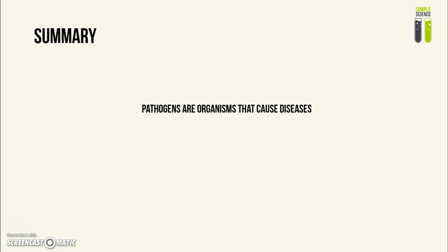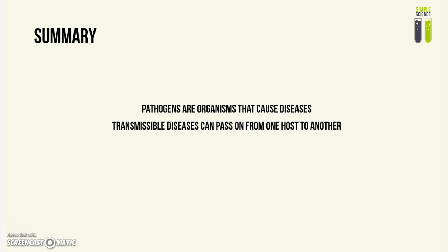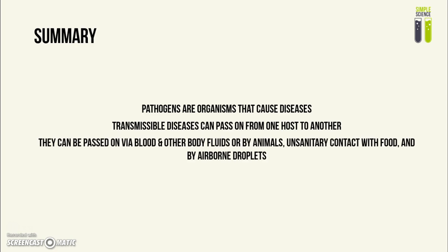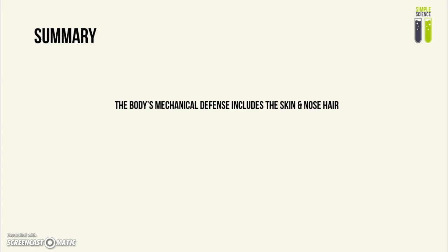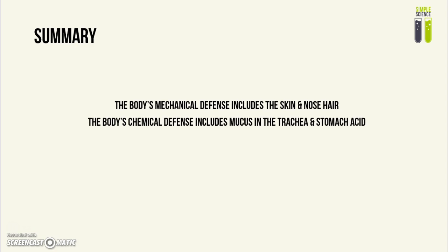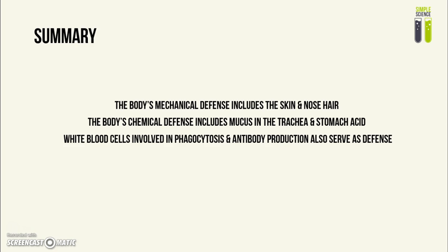To summarize: pathogens are organisms that can cause disease. Transmissible diseases are any disease that can be passed from one host to another, via blood and other body fluids, by animals like mosquitoes carrying malaria, by contact with unhygienic food or surfaces, or by droplets in the air. The body's mechanical defenses include the skin and nose hair. On the chemical side, there is mucus in the trachea and stomach acid. White blood cells perform phagocytosis and antibody production — the cellular defense. So we have three categories: mechanical, chemical, and cellular.